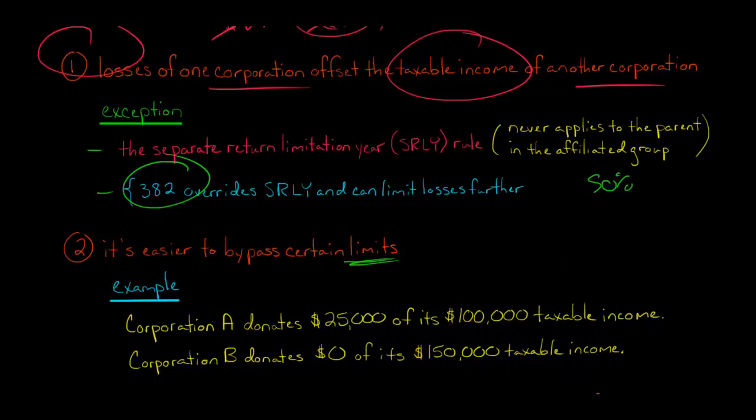And the other corporation doesn't donate any money and has $150,000 of taxable income. Now, at the time that I'm making this video, there is a rule that a corporation cannot deduct, can't take a tax deduction for more than 10 percent of its taxable income related to charitable deductions. What does that mean? Well, if they filed separately here, Corporation A and Corporation B, Corporation A would be limited. They only get a $10,000 deduction here for this charitable deduction.